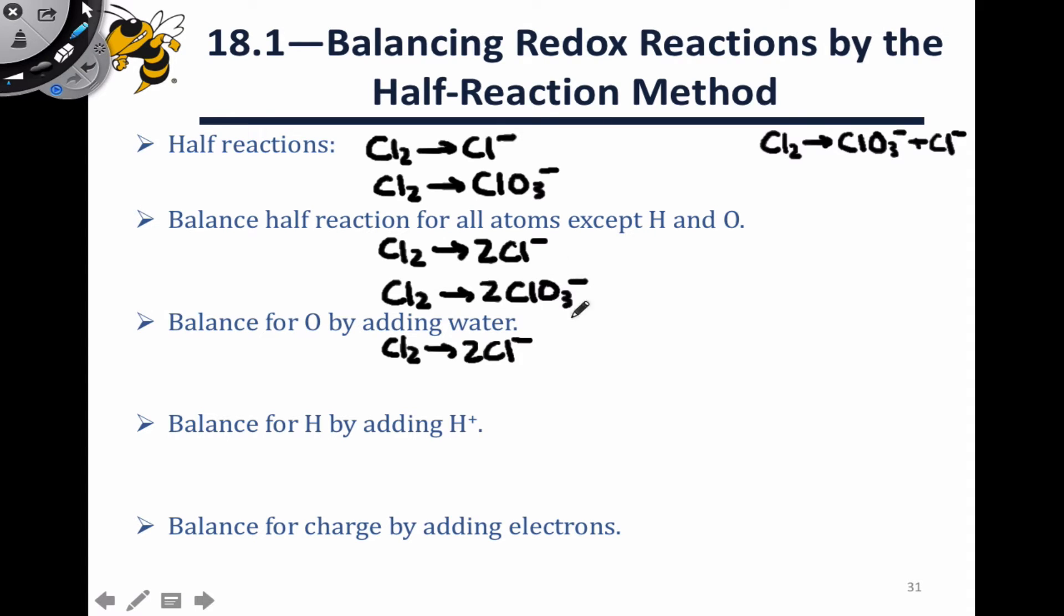In the case of the lower reaction, we have three oxygens in the ClO3- anion, and these come from water. That is, six H2O molecules must be added to the left-hand side to account for the six oxygens that we find in the two ClO3- anions on the right-hand side.